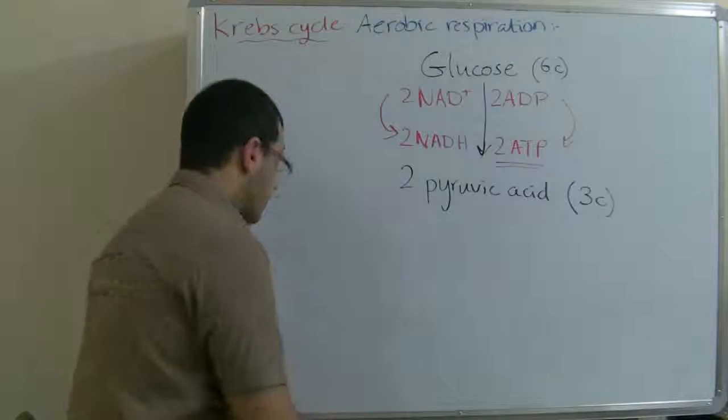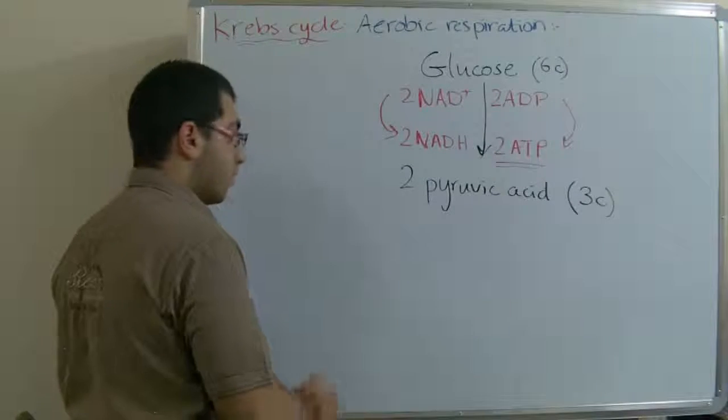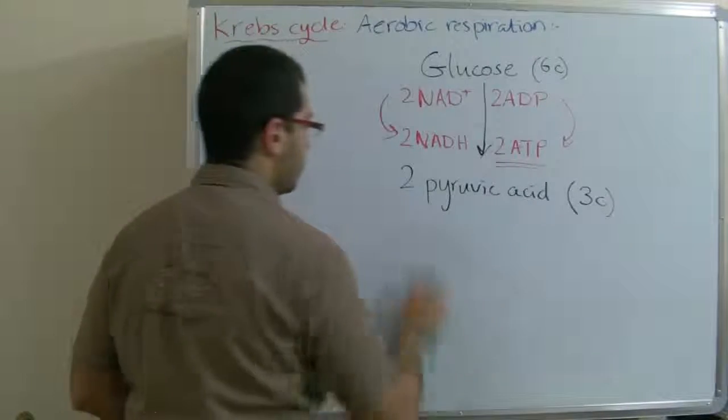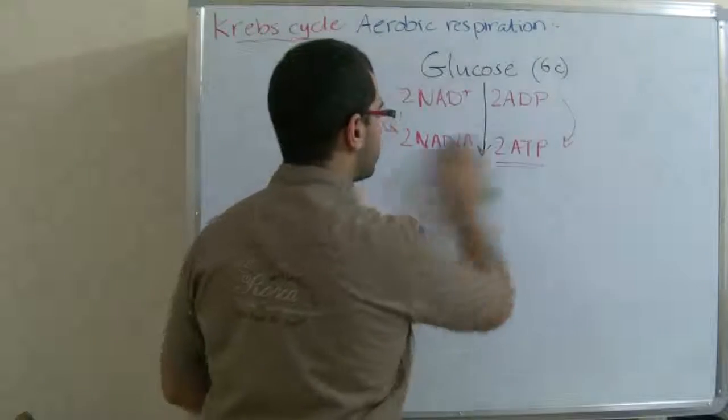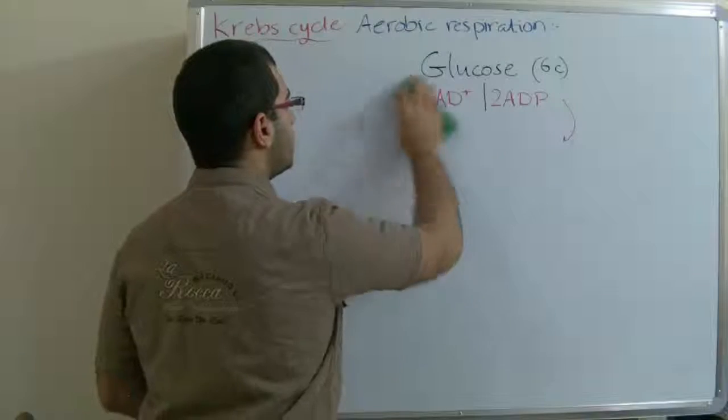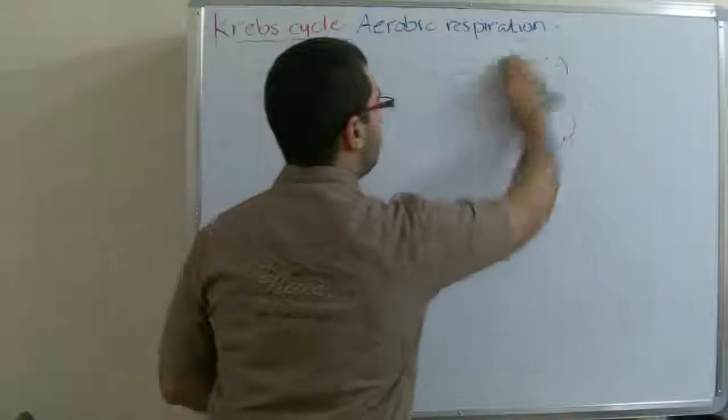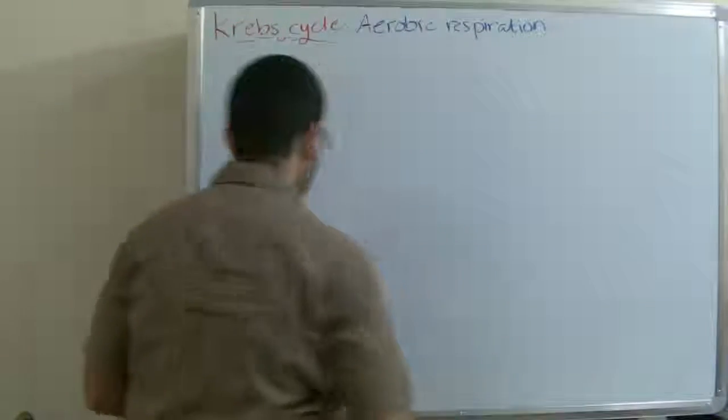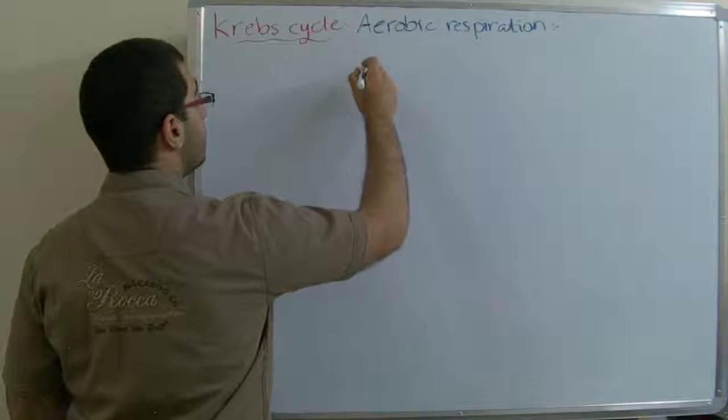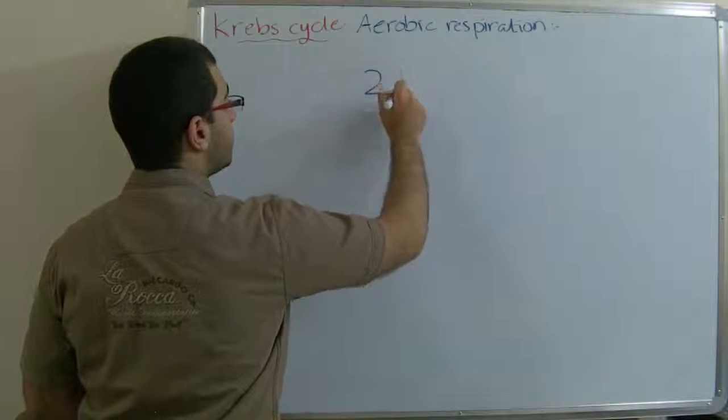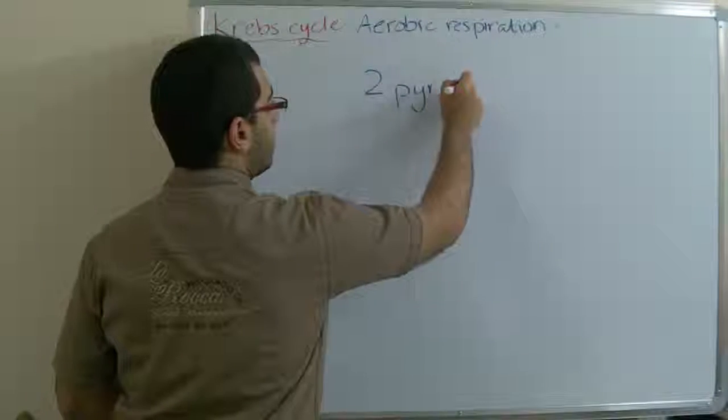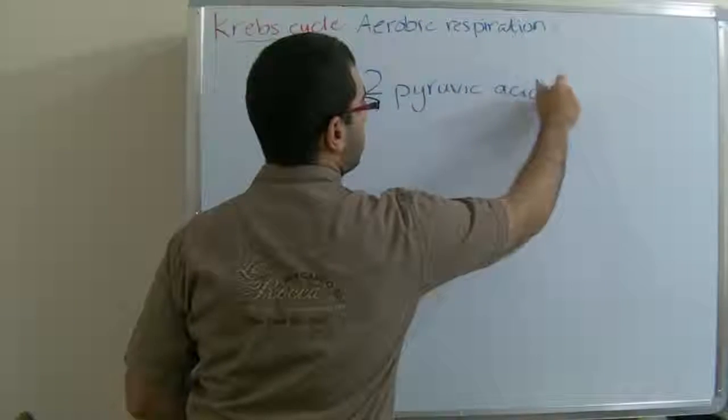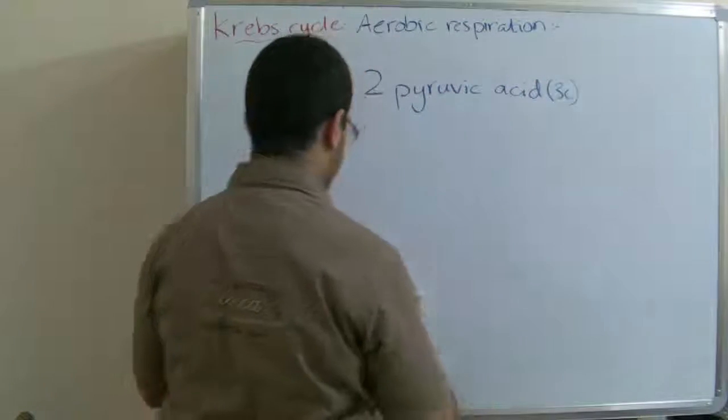After the pyruvic acid molecules are produced, we got two pyruvic acid molecules each with three carbon atoms.